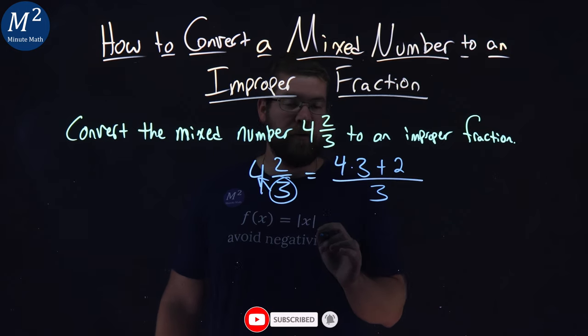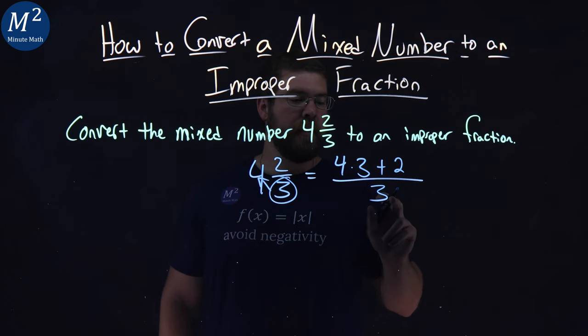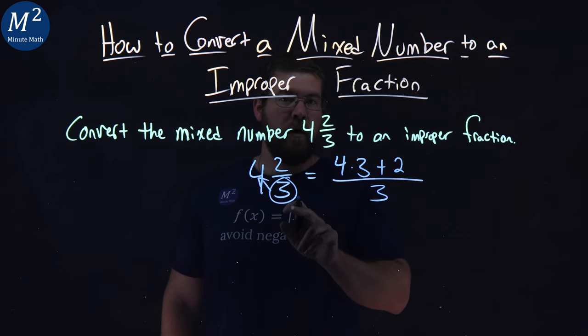And now we just got to simplify. We set it up. Remember, three times four, four times three here, plus whatever's in the numerator, divided by what was already in the denominator.